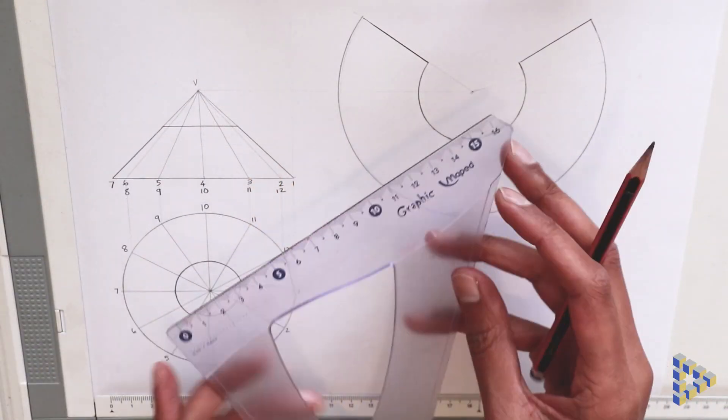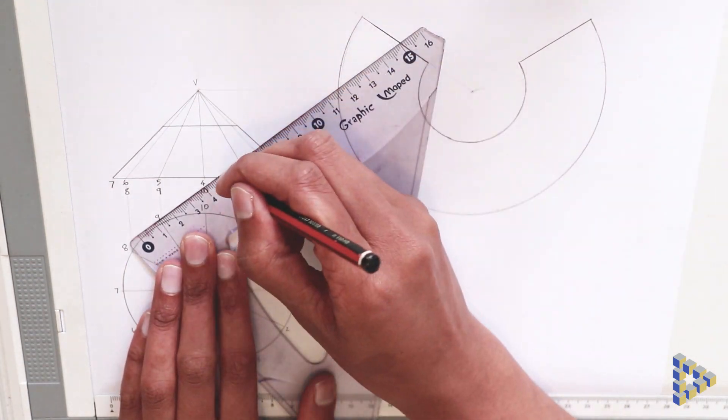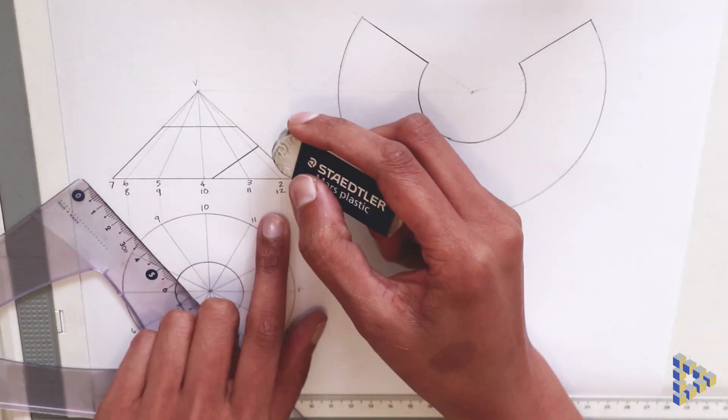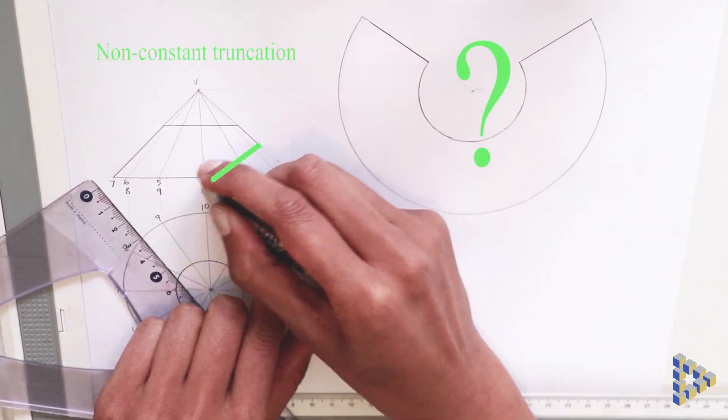In the next video, we'll see how we would use the discretizations to help us draw a non-constant truncation, as is shown on the screen.